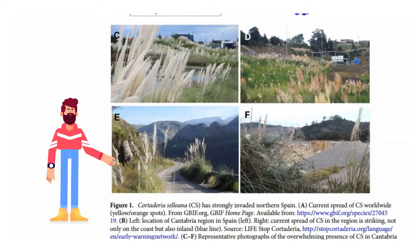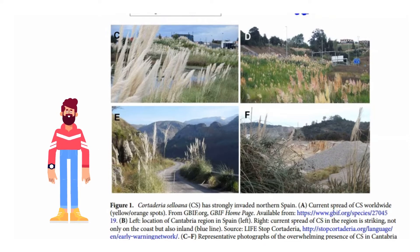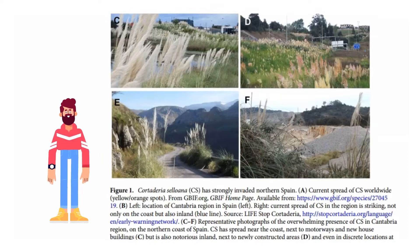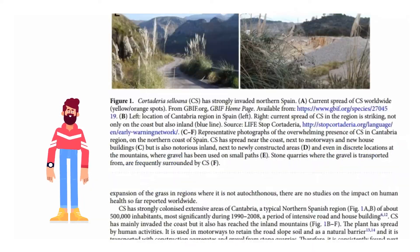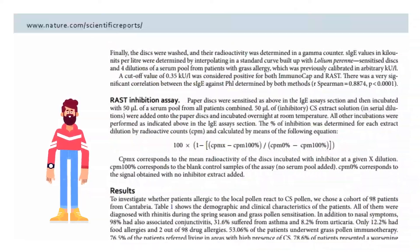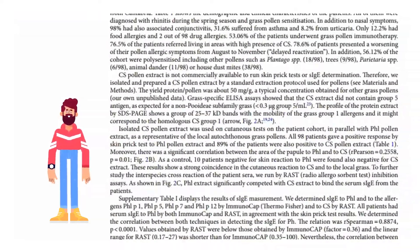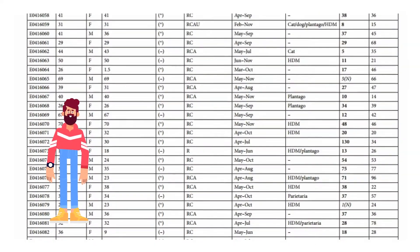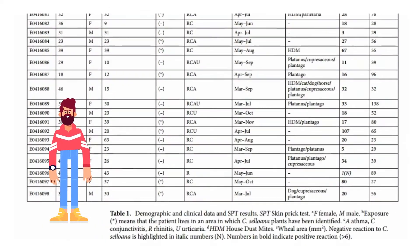To investigate this issue, the researchers have chosen a European region on the northern coast of Spain called Cantabria, where Cortaderia selloana spread is overwhelming. The study obtained Cortaderia selloana pollen extract, and analyzed the allergenic reaction of 98 patients that were allergic to pollen of local grasses.